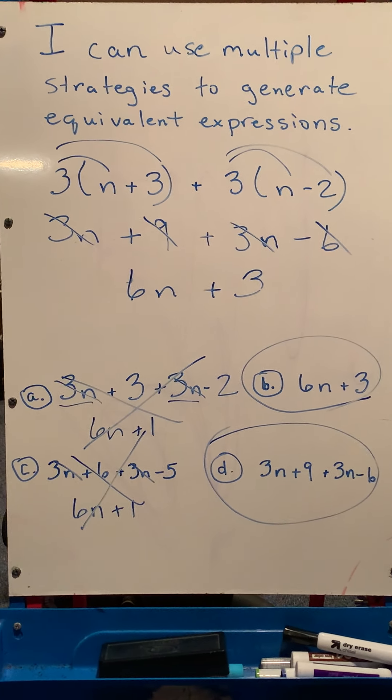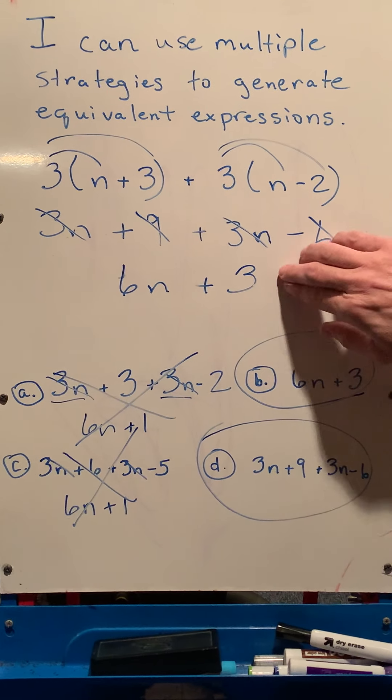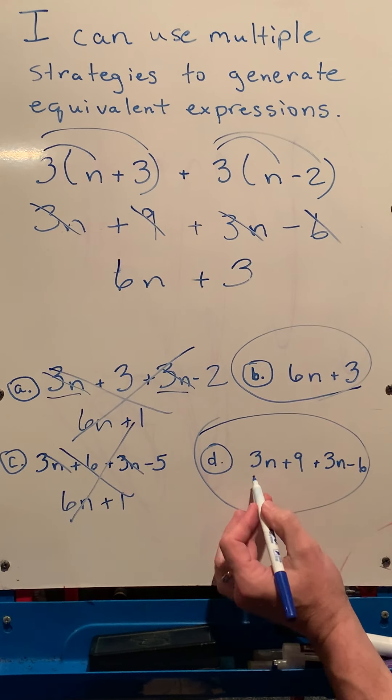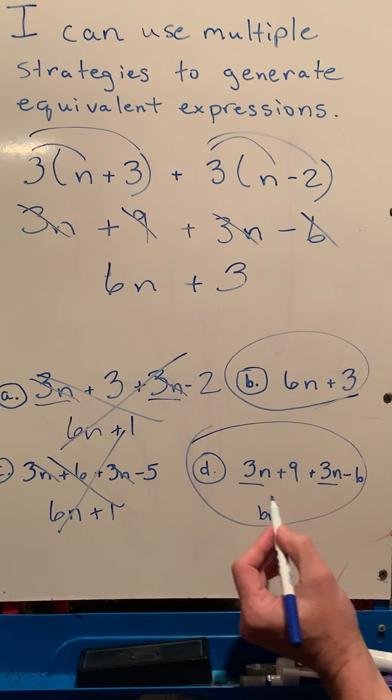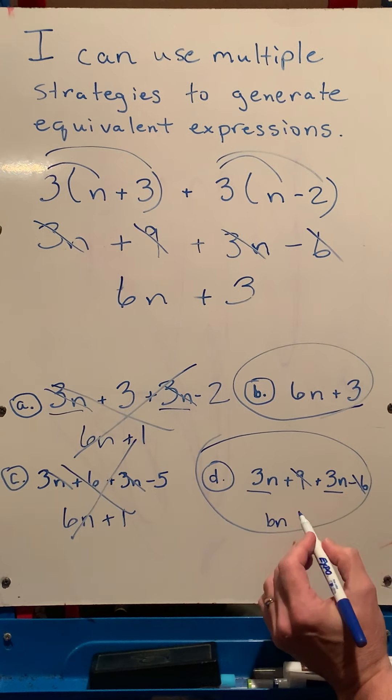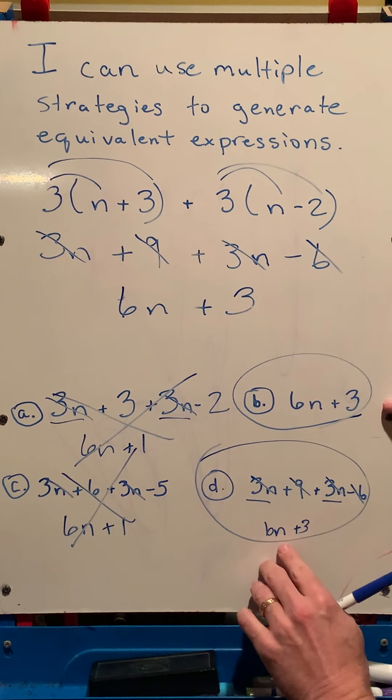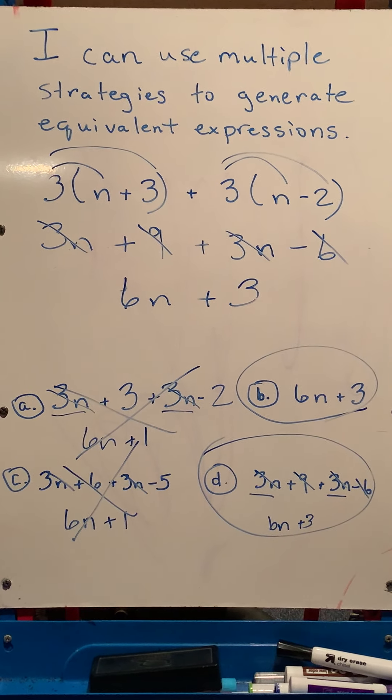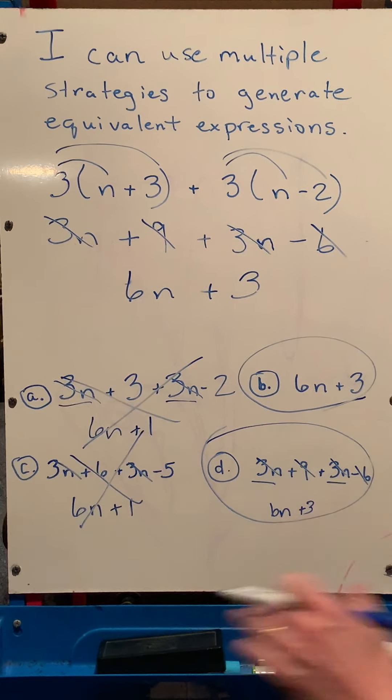So in this case, B and D were both 6n plus 3. And this one, I can prove it, because I can combine like terms also down here. And I get 6n, and then 9 minus 6 is a positive 3. So again, they all end up 6n plus 3 in simplest form. So combining like terms is probably the most efficient strategy to use for that.